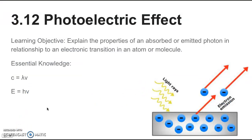Section 3.12 is on the photoelectric effect. The learning objective is to explain the properties of an absorbed or emitted photon in relationship to an electronic transition in an atom or molecule.